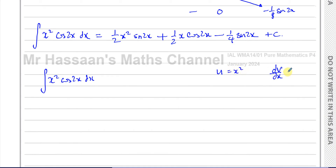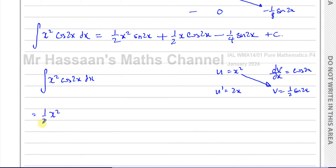u is going to be x squared, and dv/dx is going to be cosine 2x. So u' = 2x, and v = a half sine 2x. You multiply u and v together: x squared times a half sine 2x. Then you subtract the integral of u' times v: 2 times a half cancels to give the integral of x sine 2x with respect to x. We now need to integrate this part using integration by parts a second time.